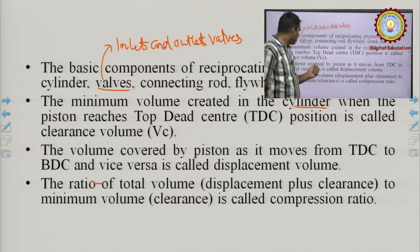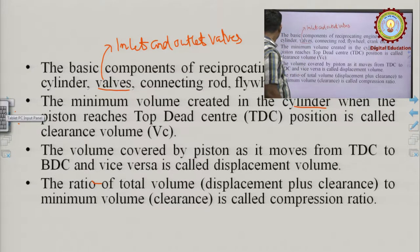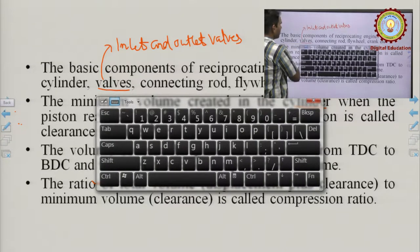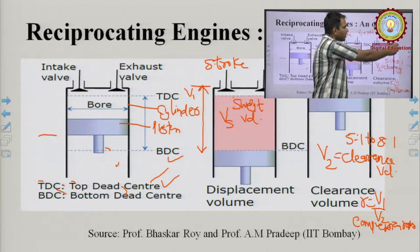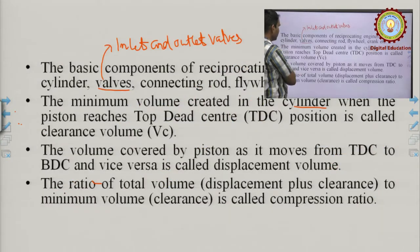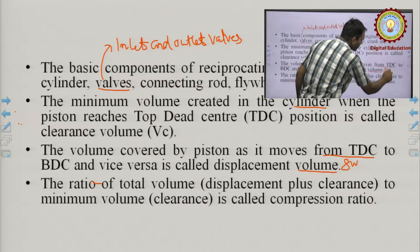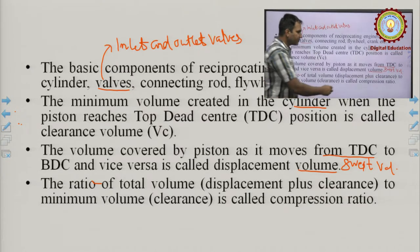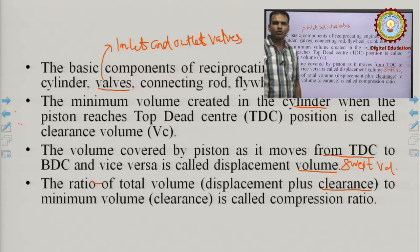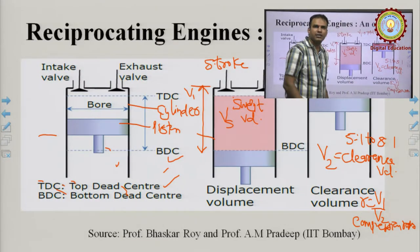The minimum volume created inside the cylinder when the piston reaches TDC is called clearance volume. The volume covered by the piston as it moves from TDC to BDC or vice versa is called displacement volume or swept volume. The ratio of total volume — displacement plus clearance — to the minimum volume is the compression ratio r = V₁/V₂.